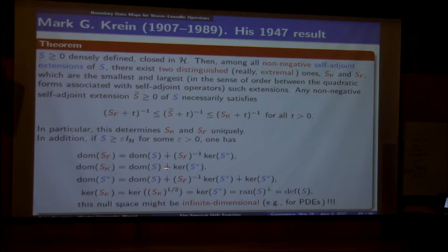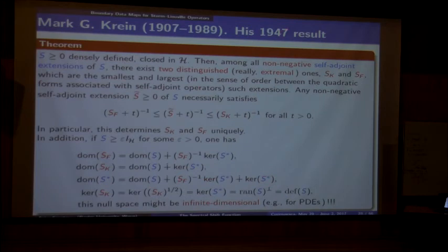The direct sum means each of these subspaces has only the zero vector in common—it's a nice partition of that part. Krein proved all of this in his paper from 1947—a fantastic paper, unfortunately never translated; only the Russian original exists. So you have to have good friends, unless you speak Russian.